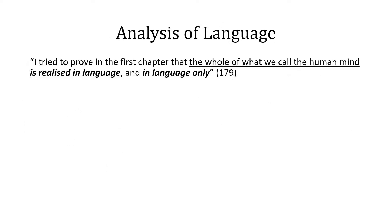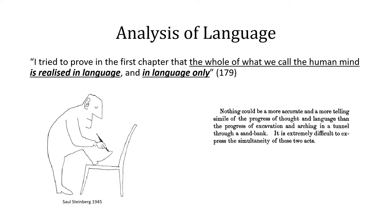Mueller was trying to prove that the whole of what we call the human mind is realized in language, and in language only. And if we recall, he wrote: nothing could be more accurate and a more telling simile of the progress of thought and language than the progress of excavation and arching in a tunnel through a sandbank. It is extremely difficult to express the simultaneity of these two acts. And in the science of language, the quest is to uncover the roots of language.